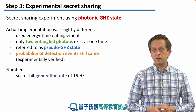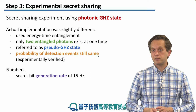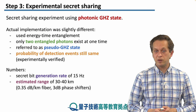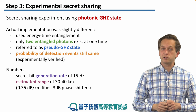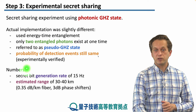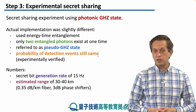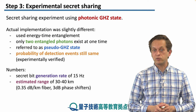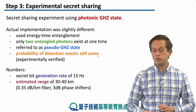Here are some numbers from the experiment. The secret bit generation rate was 15 bits per second, or 15 Hz. The estimated range of the scheme was 30 to 40 kilometers, meaning secret bits could be generated even with nodes that far from the source. This was achieved with fiber attenuation of 0.35 dB per kilometer — quite high by today's standards, where 0.2 dB or better is possible. The noise introduced by the phase shifters was also considered to be 3 dB. This concludes our experimental discussion of secret sharing.